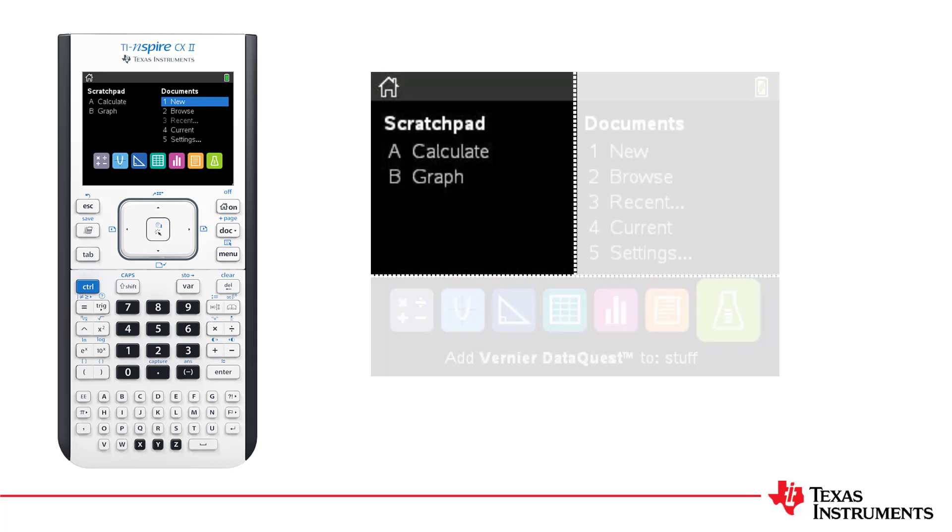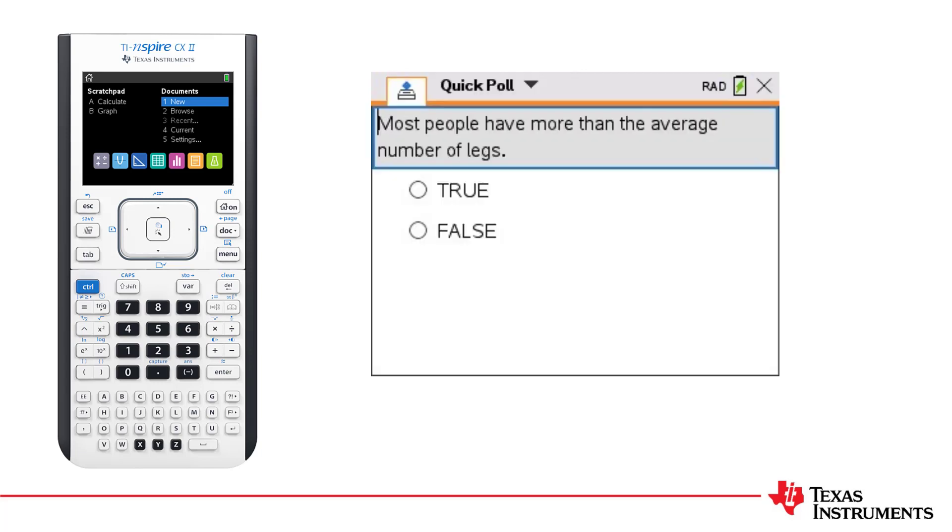Finally, on the left hand side, we see the temporary environments. Most of the time, these consist only of the scratchpad's calculate and graph options. However, if your school is using a wireless navigator system, you may find a poll or question in there from time to time, sent to you by your teacher.